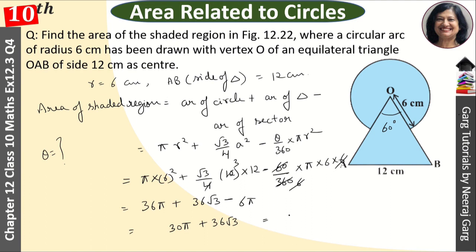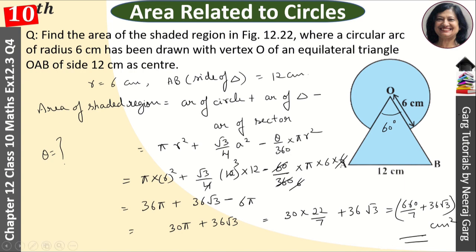Next step, we add the pi value: 30 into 22 upon 7 plus 36 root 3. Solving this, we substitute pi equals 22 upon 7 into the bracket. This gives us the final answer in centimeter square. I hope you understood. If you are new to my channel, please subscribe.